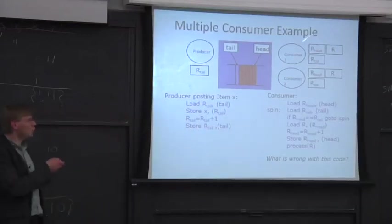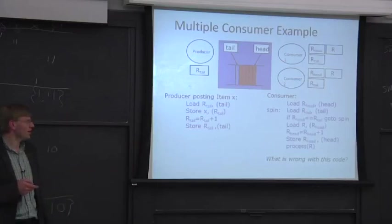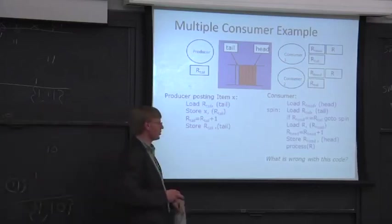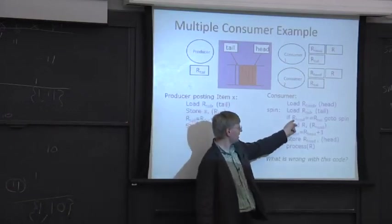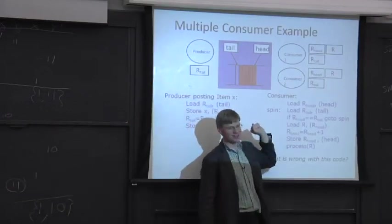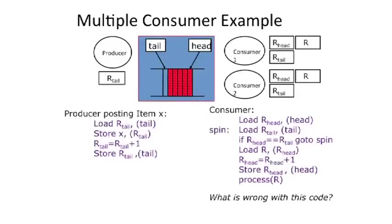But all of a sudden, if we have two consumers and we go and stare at this piece of code carefully, this is our original piece of code, one of the things that happens is they check the head pointer to see if it's equal to tail, which means it's something available.